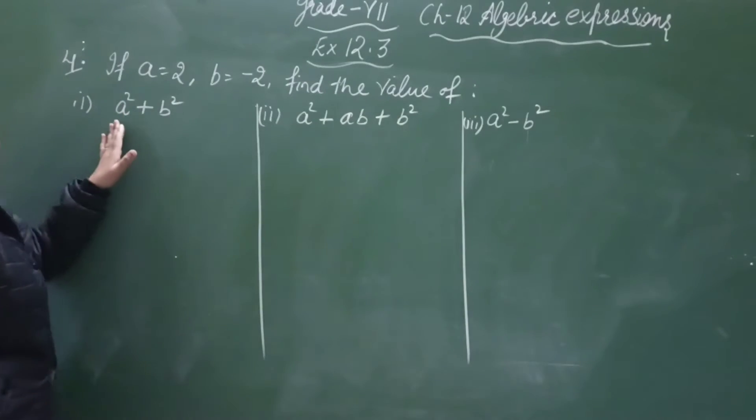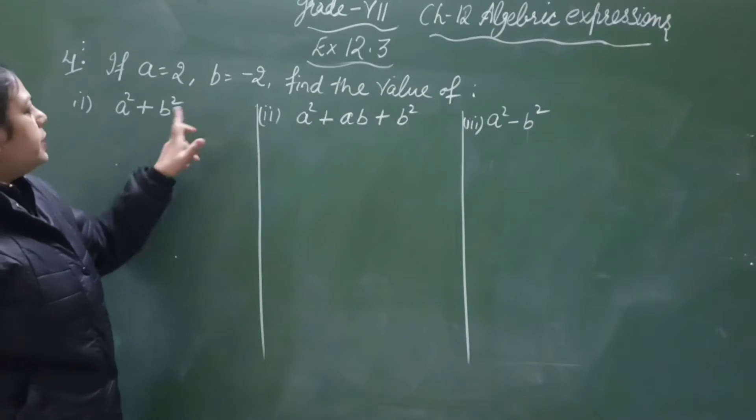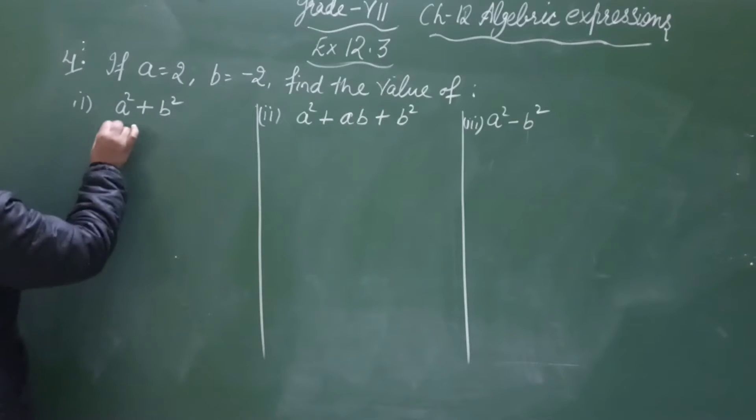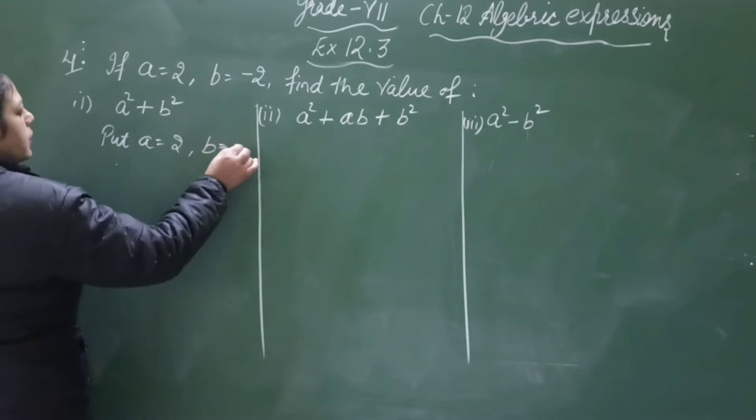So first we start with our first part, a square plus b square. Here we have to put a equals 2 and b equals minus 2. So now we substitute a is equal to 2 and b is equal to minus 2.